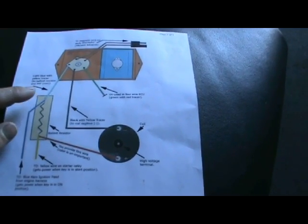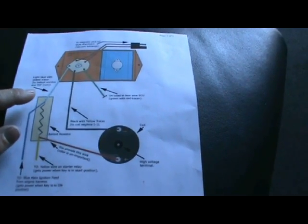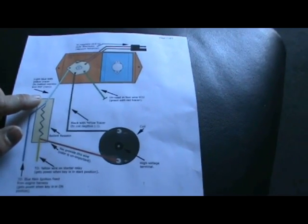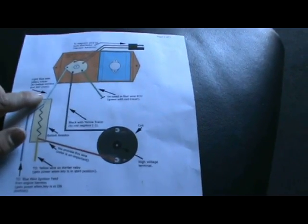So you can use a test light, unplug the connections, turn the key on, and whichever one has power when the key is on, that is where you splice that into.